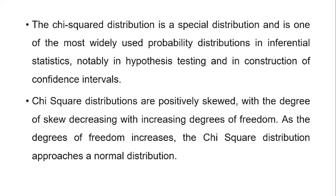The chi-square distributions are positively skewed, with the degree of skew decreasing with increasing degrees of freedom. As the degrees of freedom increase, the chi-square distribution approaches a normal distribution. This is one of the important qualities of the chi-square distribution — with the increase in degrees of freedom, the chi-square distribution approaches the normal distribution.